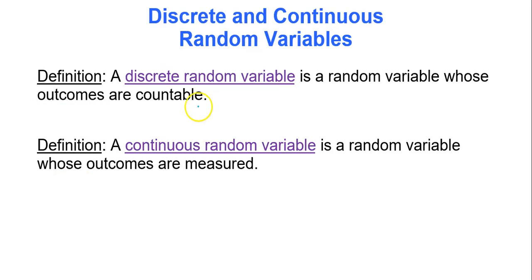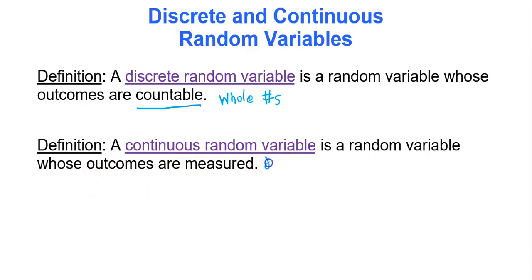A discrete random variable is one whose outcomes are countable — those nice whole numbers: 0, 1, 2, 3, and so forth. A continuous random variable is one whose outcomes are measured, so we're talking decimals, and you get to choose how accurate you want to be. This module we focus solely on discrete; continuous comes at a later time.